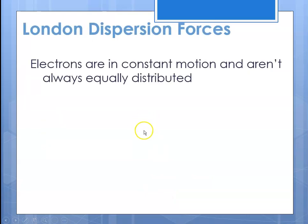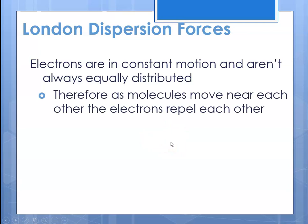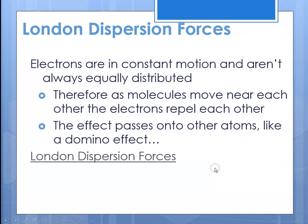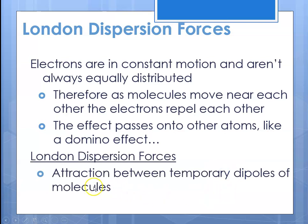The London dispersion forces — if you think about it, electrons are in constant motion, and they're not always equally distributed. As molecules move around and encounter one another, the electrons are going to tend to repel away from each other. For a few moments, you have a polar region in the molecule where the electrons move to one side of the electron cloud, and the effect passes on to other atoms, creating a kind of domino effect. The London dispersion forces are the attraction between these temporary dipoles that form because the electrons are moving around and getting far away from one another.